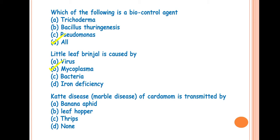The next question is, Katte disease of cardamom is transmitted by? The answer is A, banana aphid, that is the scientific name Pentalonia nigronervosa. This Katte disease is a very important destructive disease of cardamom, also known as mosaic disease, caused by a virus, the cardamom mosaic virus. In this, the young leaves show characteristic mosaic symptom with chlorotic and green stripes.